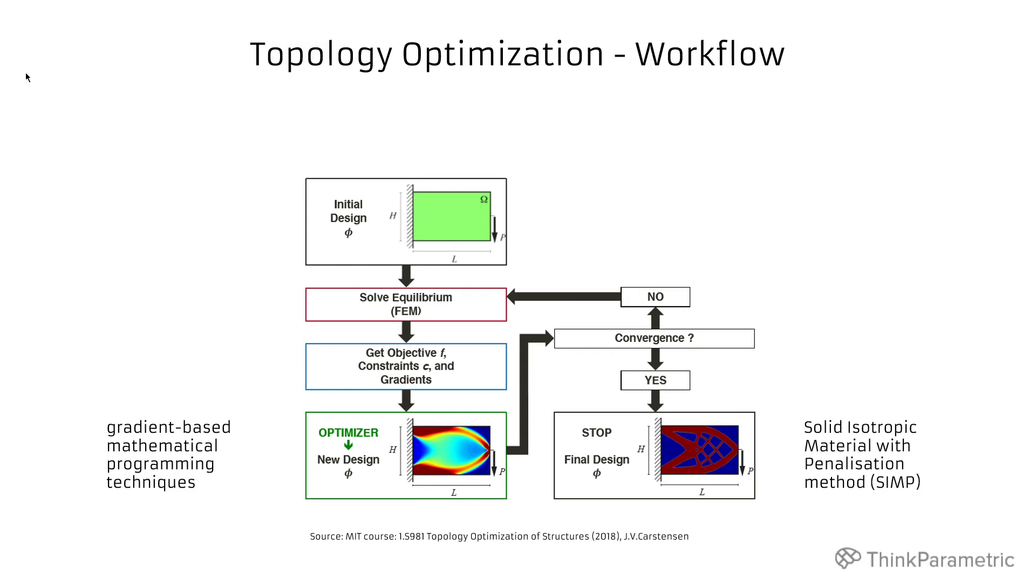And the gradients they stand for to which direction density should go to actually improve our function. And we repeat this process for many iterations till the convergence criteria is reached. Also using some smart penalization we could get in this iterative process from design with variable densities to a 0-1 solution. As you see on the right hand side there's a binary solution that material exists or not.